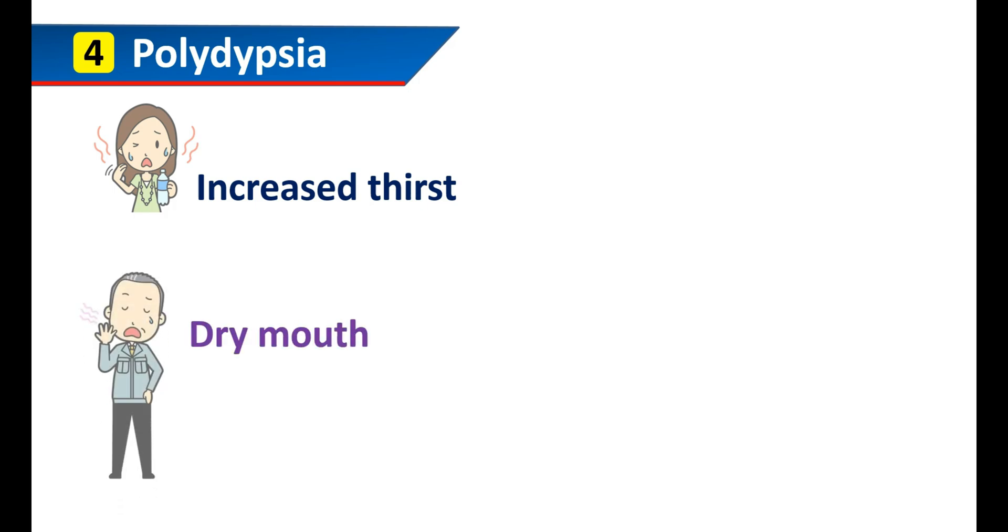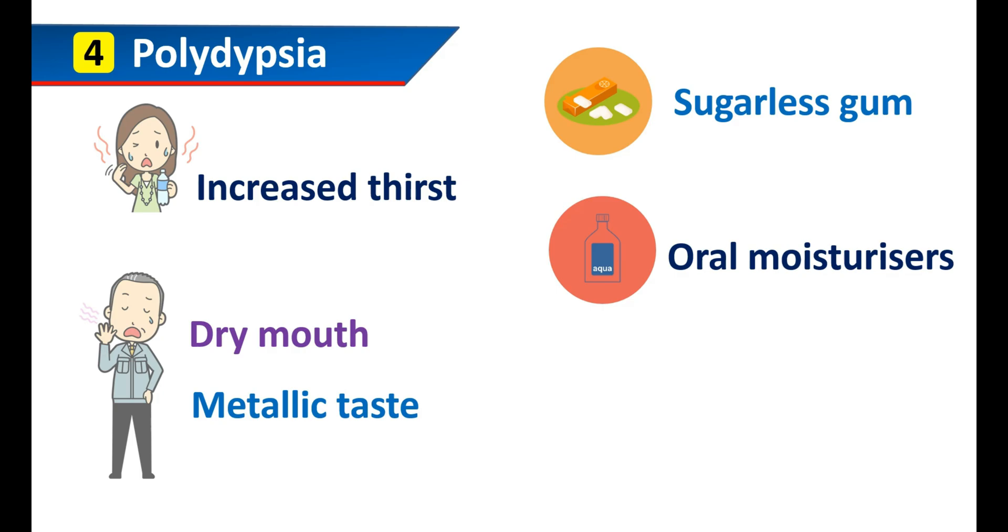The fourth one is polydipsia. It is a condition of increased thirst that can be observed with the use of lithium. It may result in the development of a dry mouth. In a few people, it may also develop a metallic taste. Polydipsia may be associated with polyuria. Due to the loss of more water from the body, the thirst centers may be stimulated, leading to polydipsia. However, in a few people, this polydipsia can also be observed without any development of polyuria. Dry mouth can be controlled by chewing sugarless gums that induce salivation. Glycerin-based oral moisturizers can also be used to manage the dry mouth. However, in people with severe dry mouth, cholinergic mouthwashes can also be used.